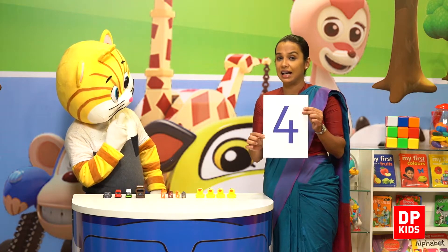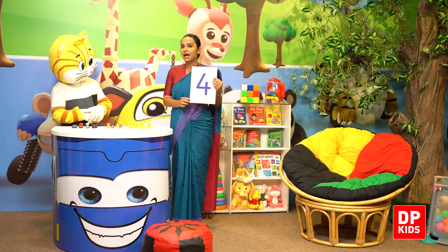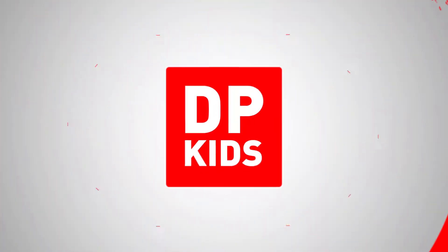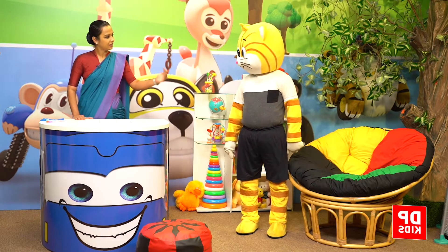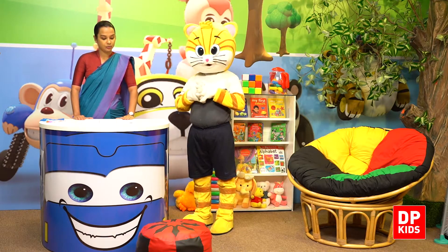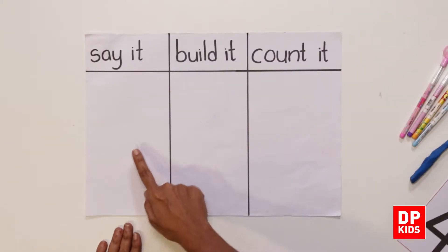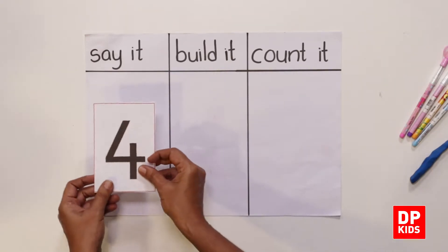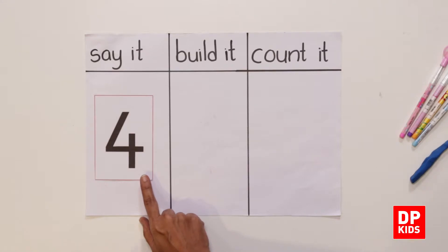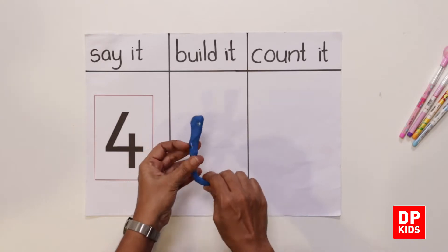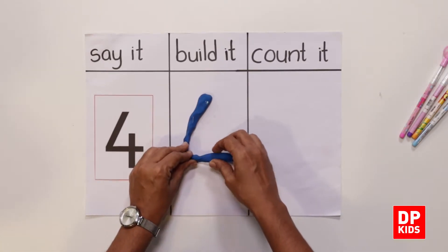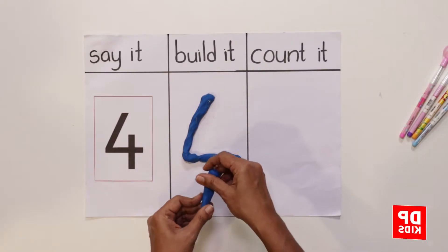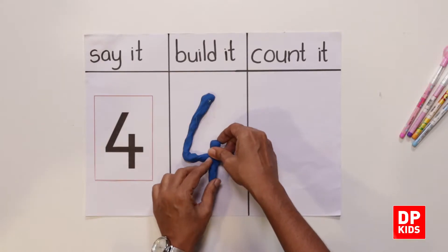Let us check how we are going to say, build and count in four. Number four — what is this number? Number four. So we'll build it. One slanted line, and another line forward, and a small line across.